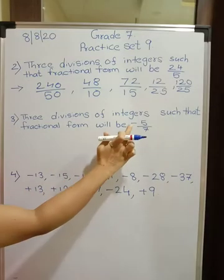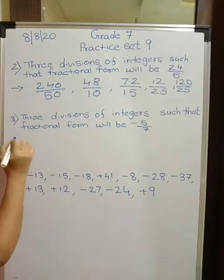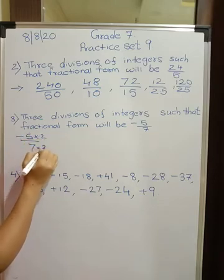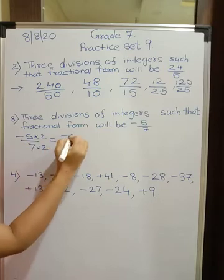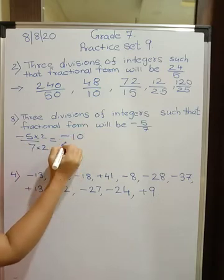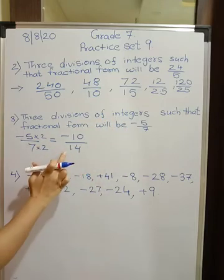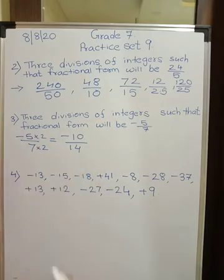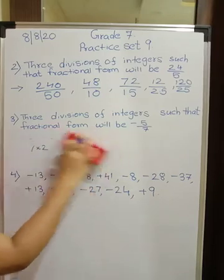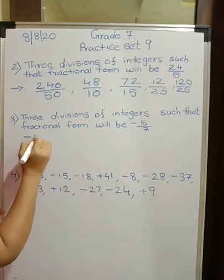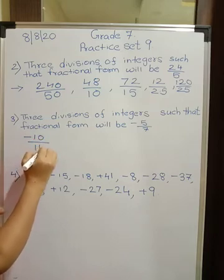Now you have to take care minus 5 upon 7 is there. So minus 5 upon 7, first multiply by 2, multiply by 2. What will be your first answer? Minus 10 upon 14. So this will give back again minus 5 upon 7. So minus 10 upon 14 is your first fraction.